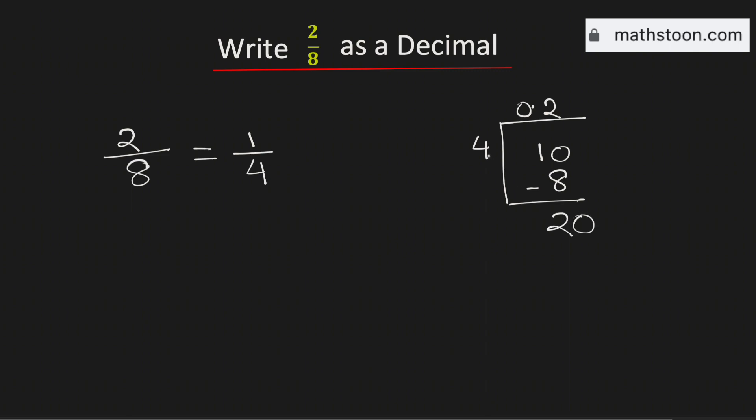Now put a 0 here and we know that 4 times 5 is 20. And if we subtract we get 0. Therefore, 1 over 4 as a decimal is equal to 0.25. This means that the fraction 2 over 8 in decimal form is equal to 0.25.